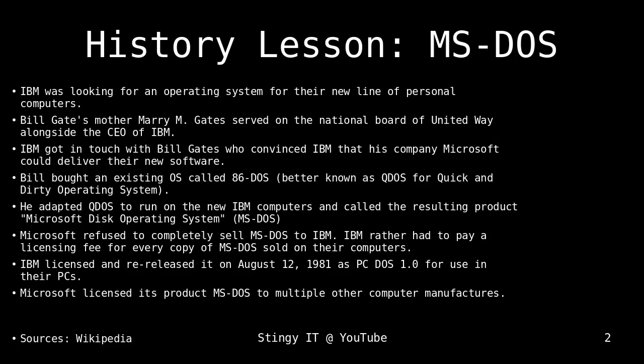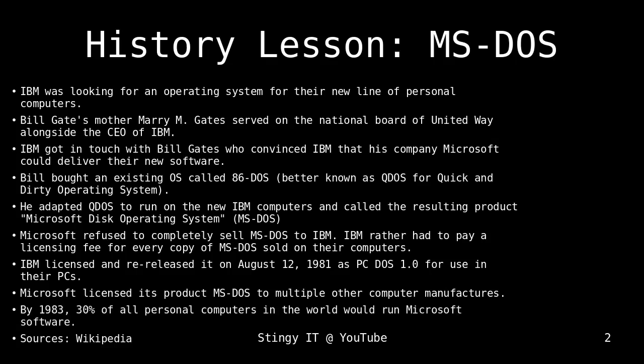While IBM wasn't profiting from that arrangement, Microsoft did. Microsoft made a big profit on MS-DOS, and by 1983, 30% of all personal computers in the world were running on Microsoft software. That was only two years after the first release, and they had already taken over 30% of all personal computers — that's really a lot.